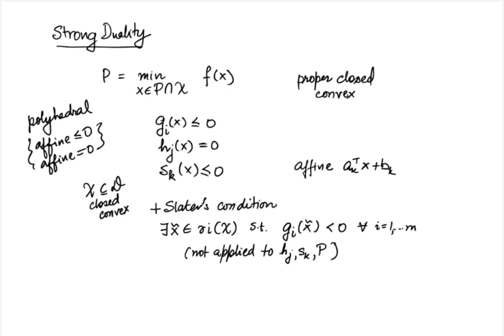The assumption of existence of a strictly feasible point is not unrealistic and is in fact satisfied in many many problems. So, under all these conditions — that is, a convex problem of the form provided here and the Slater's constraint qualification — strong duality holds. We did require a very specific set of conditions to ensure strong duality as compared to weak duality. Further, these conditions are not necessary but only sufficient. Strong duality may actually hold even if they are violated, say if the problem is non-convex. In fact, there do not exist any necessary conditions, but there are more sets of sufficient conditions that have been identified.